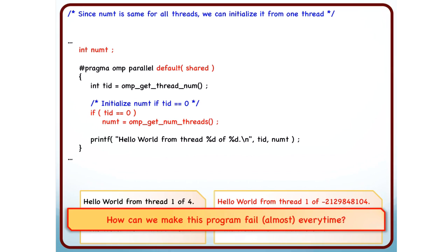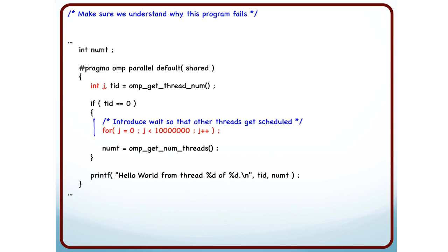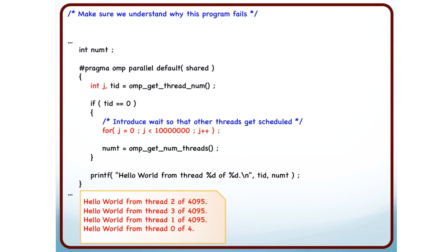How do I make this fail every time? Long wait. Where? Where do I put the long wait? So I can put a long wait inside this if condition. What will happen because of this? Thread 0 will go into a wait state and not come out of this for a long time. It will not call OMP get num threads for a long time because it is waiting. And in the meanwhile, the other threads are going to go ahead and print hello world. So if I run this code now, I will most probably see an output like this.